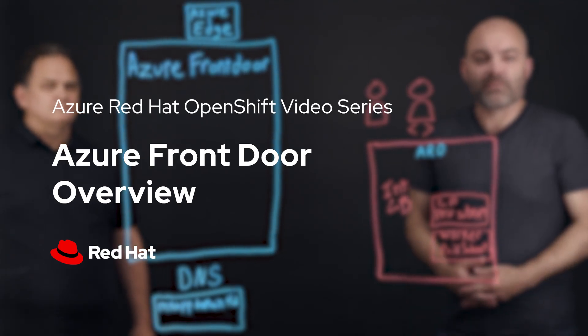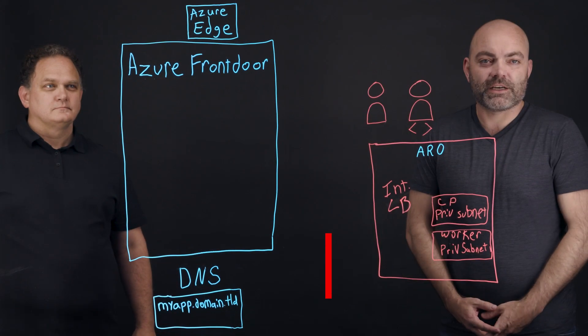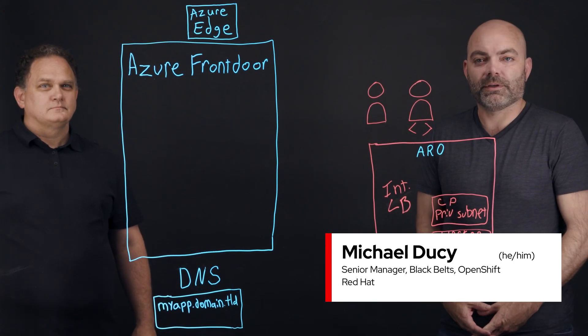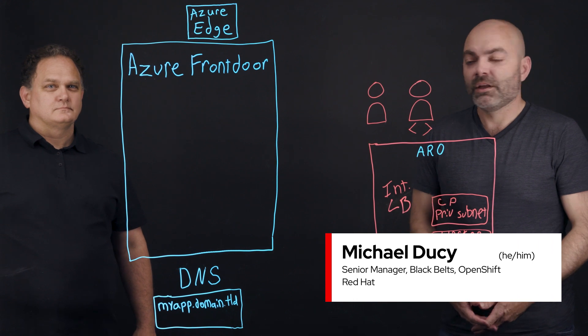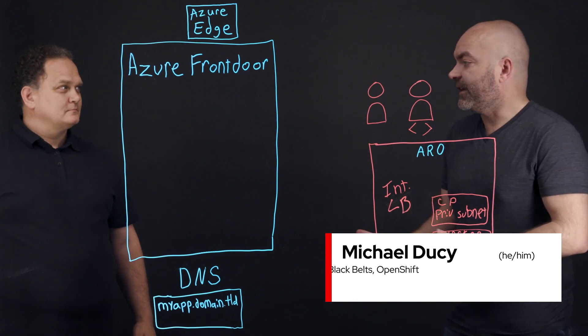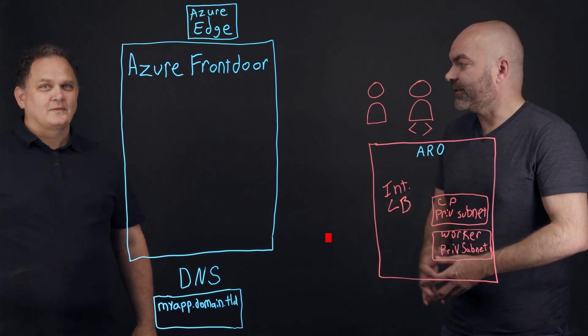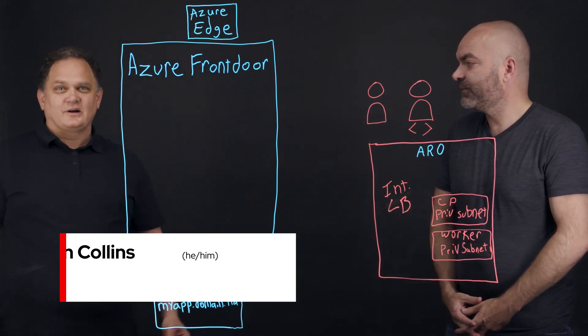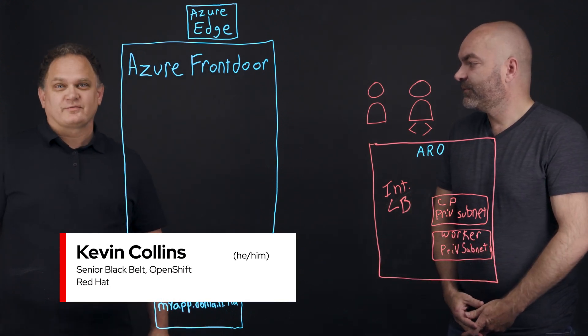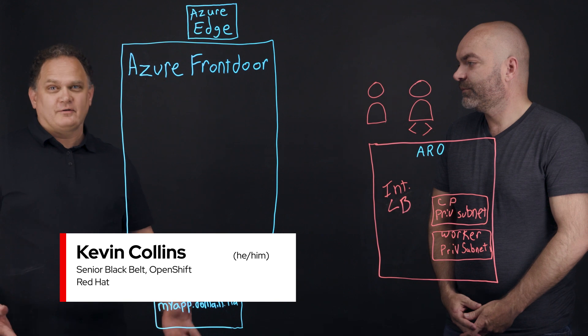Hi, I'm Michael Ducey, Senior Manager, Managed OpenShift Black Belt at Red Hat. And with me today is Kevin Collins. Hi, I'm Kevin Collins, Managed OpenShift Black Belt here at Red Hat.